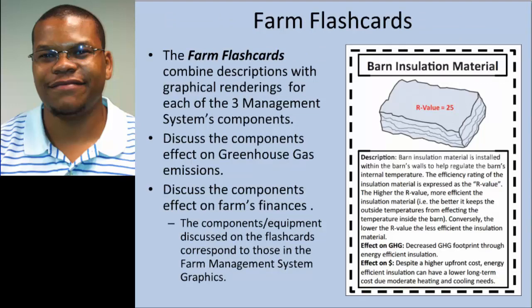The farm flashcards combine the graphics and the resource information, as each card contains a functional description and a graphic for a given component or piece of equipment — the building blocks of each management system. Here we have the card featuring barn insulation material with an R value of 25, from the housing management system. This card provides very general information about what barn insulation is, its role in the housing management system, and briefly describes how barn insulation decisions can impact the farm's carbon footprint and finances. These components featured in the flashcards are the same ones labeled in the farm management system graphics and discussed in the resource information section.